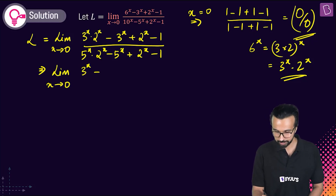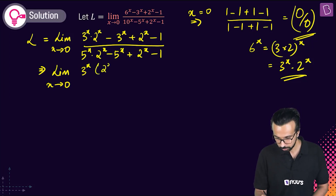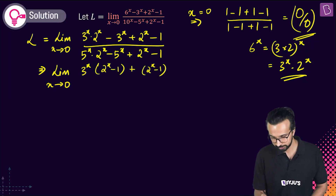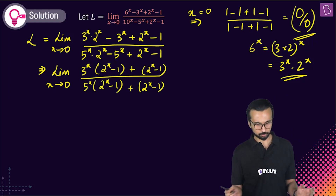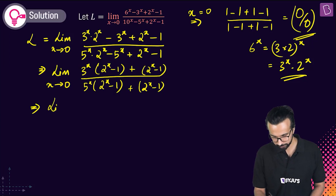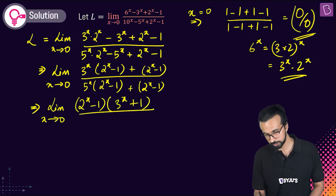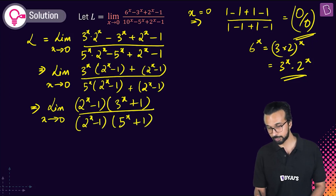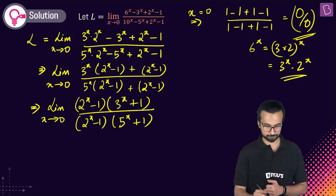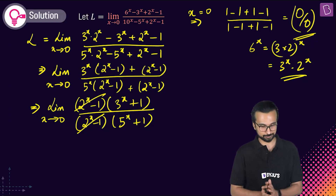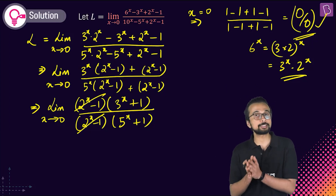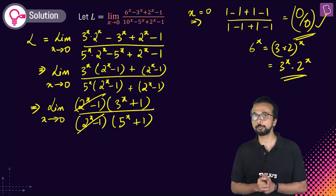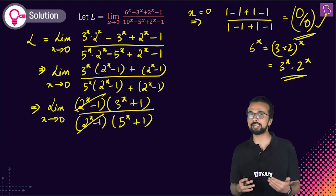Denominator similarly becomes (2ˣ - 1)(5ˣ + 1). So the limit is: (2ˣ - 1)(3ˣ + 1) / [(2ˣ - 1)(5ˣ + 1)]. The factor (2ˣ - 1) was the cause of the zero by zero — when x=0, 2⁰-1=0. We cancel it out, identifying and removing the source of indetermination.